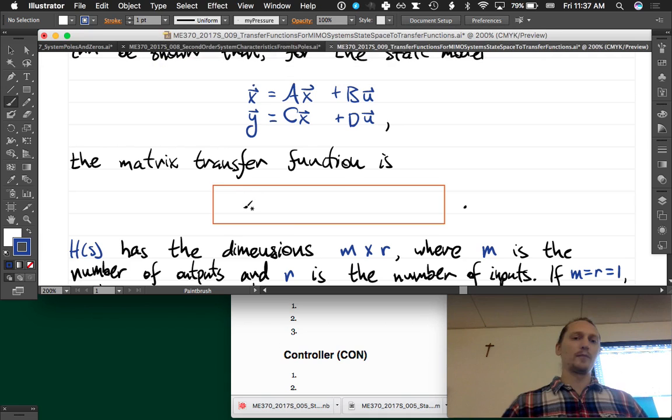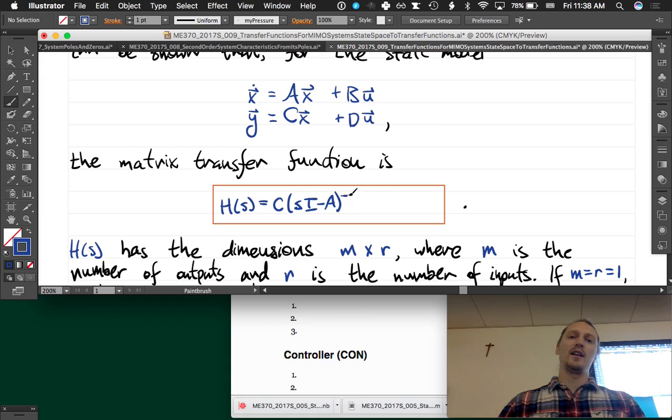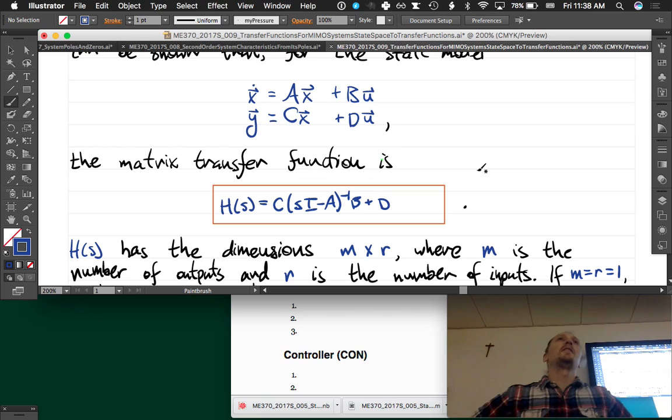The matrix transfer function is, and I know you guys are going to be shocked by this, H(s) equals the C matrix times quantity (sI - A) inverse B plus D. We knew that, it was the same as the system transfer operator, right? Yes, gasp.